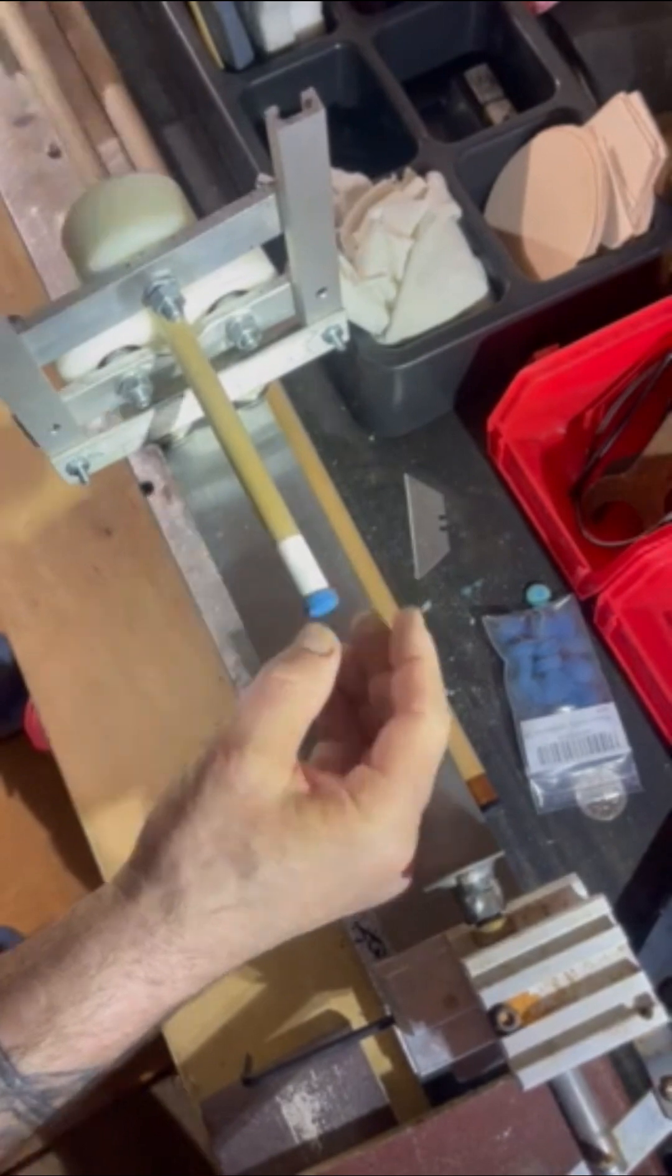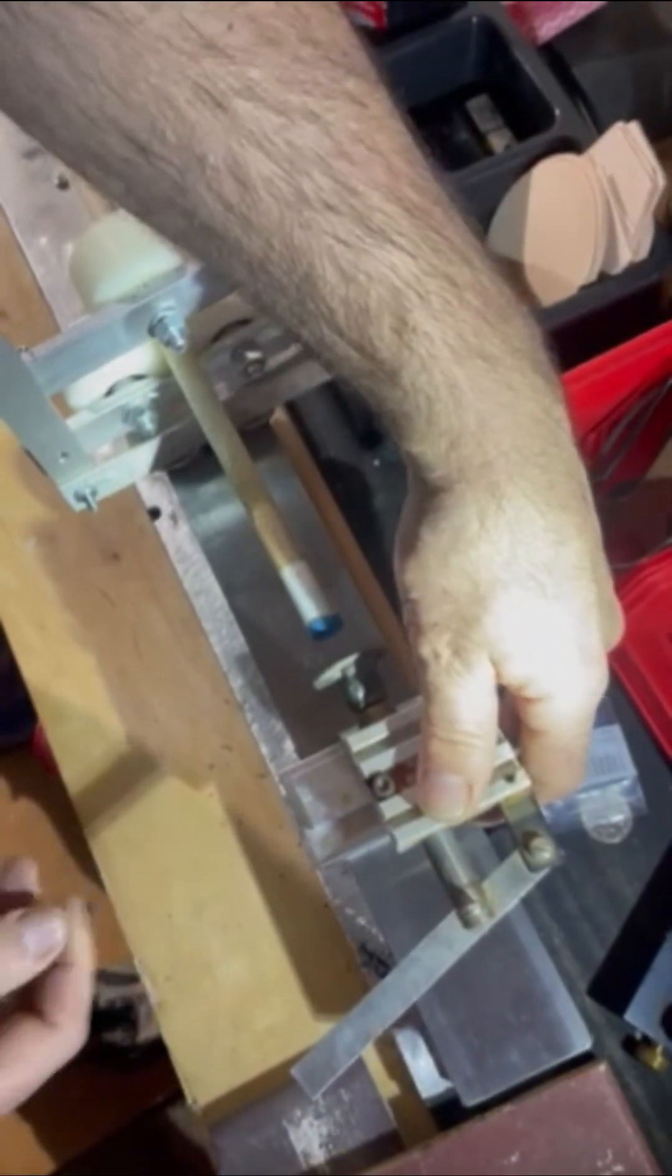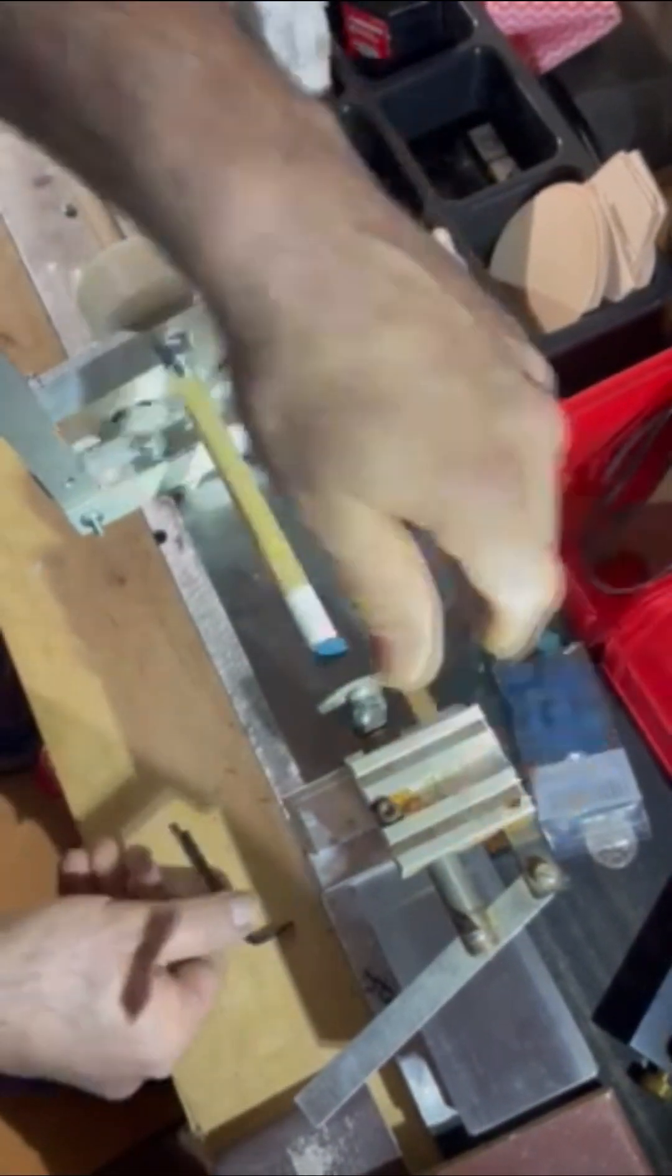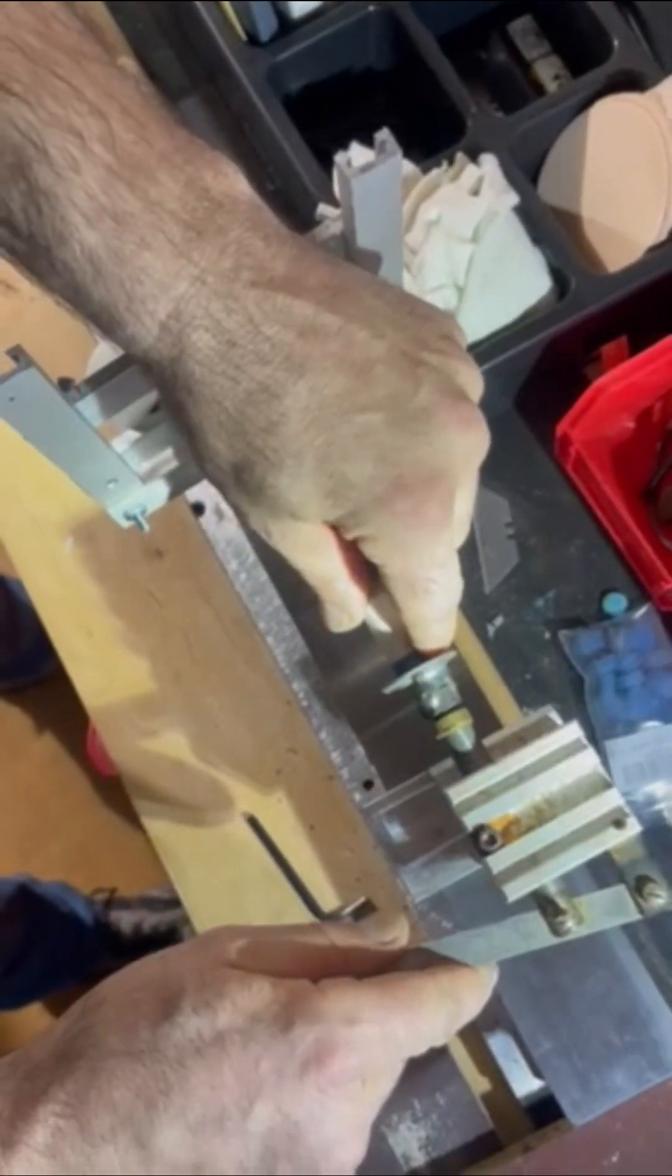And here he is going to apply the tip, getting it as even as possible. Bringing the tool that we have made to help apply the pressure. That little bit of pressure is going to let that glue set just a little bit better.